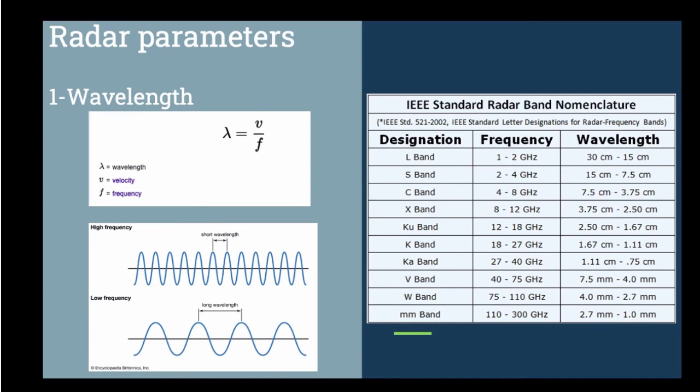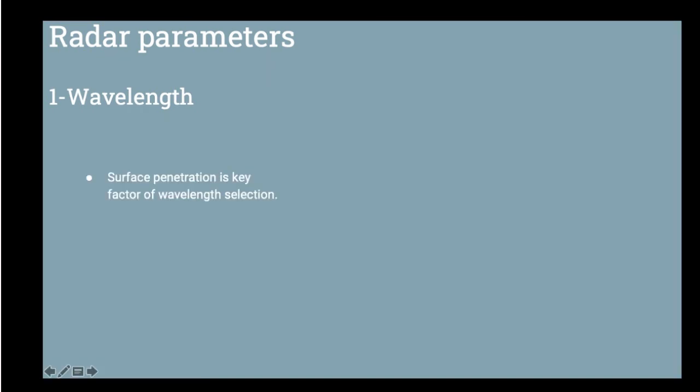In radar, signal travels with the speed of light so the velocity will be the speed of light. If the wavelength is short, it means the frequency of the signal will be high. And if wavelength is long, the frequency will be less. Here in this picture we can see some standards of different radar bands that are used in different fields. We will explain and describe them a little bit more in the next slide.